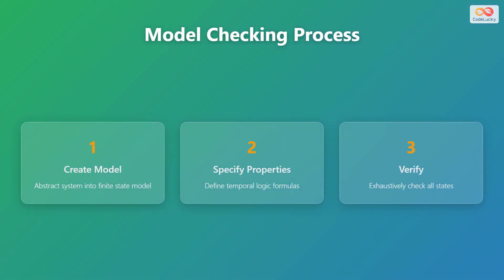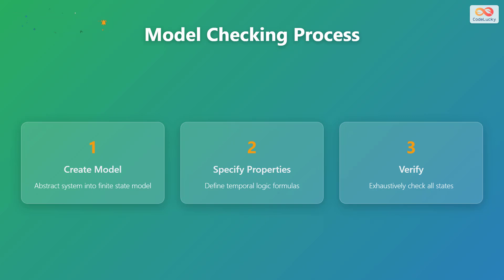The model checking process involves three main steps. First, create a model by abstracting the system into a finite state model. Second, specify the properties that the system should satisfy, defining them as temporal logic formulas. Third, verify the model by exhaustively checking all states to ensure the properties hold.